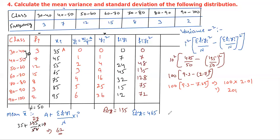The variance is 201. The standard deviation σ = √201. This is the variance and standard deviation for the grouped frequency distribution. If you found this video helpful, please like, subscribe, and share. Thank you friends for watching.